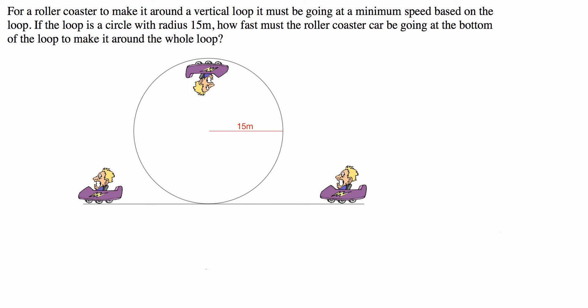Hi guys. I've been given this question by a student of mine. It's a physics question regarding kinetic and potential energy. The question says: for a roller coaster to make it around a vertical loop, it must be going at a minimum speed based on the loop. If the loop is a circle with radius 15 metres, how fast must the roller coaster car be going at the bottom of the loop to make it around the entire loop?